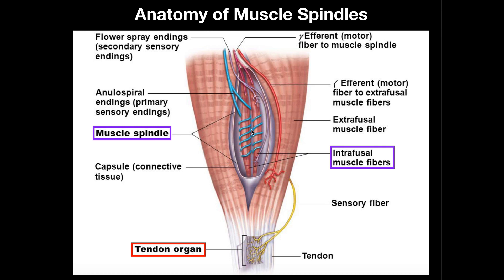These sensory nerve endings send their axons up to the central nervous system — first to the spinal cord and then to the brain — so the brain can monitor the length of the muscle at any given time. In that way, it acts as a proprioceptive organ and helps us monitor the position of our limbs in space. Whether your elbow is extended at 180 degrees or flexed to 90 degrees, part of how your brain senses that is by measuring the length of those muscles via the muscle spindles.